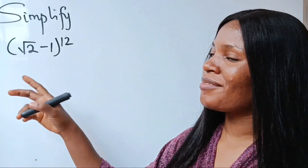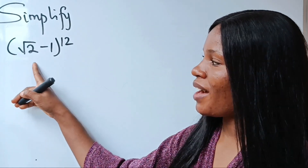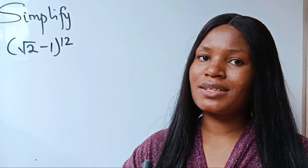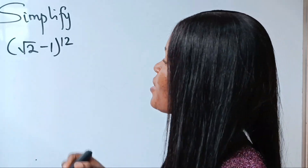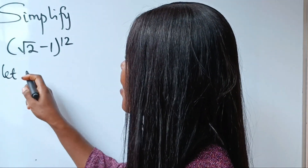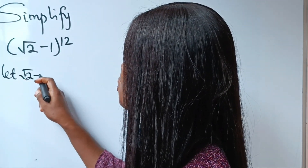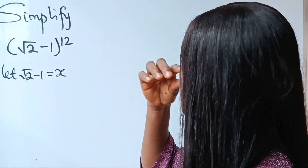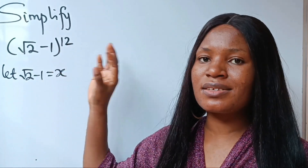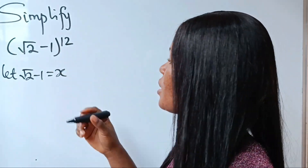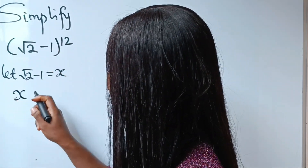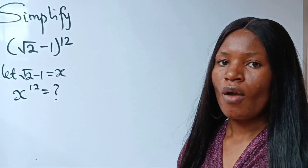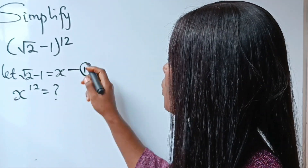Now this is what we have. The first thing you need to do is to simplify this, and always call whatever you have inside your brackets something. We are going to call it x. So you are going to say: let √2 minus 1 be equal to x. That is going to simplify this expression, because it's going to be x to the power of 12. Let's call this equation 1.